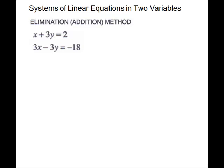So for this problem, if we add these just as they are, the y will cancel. Positive 3y and negative 3y will cancel. That gives us 4x equals negative 16. Divide by 4, and x will equal negative 4.